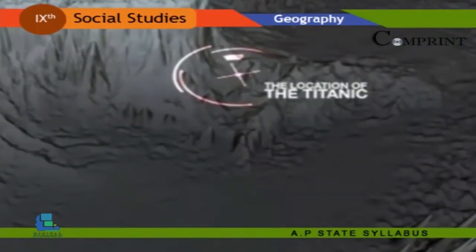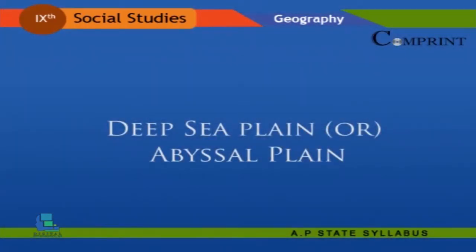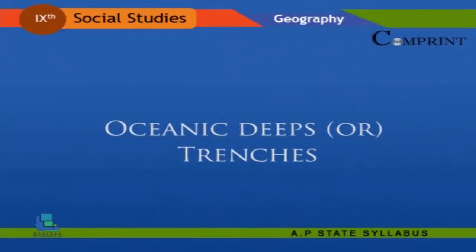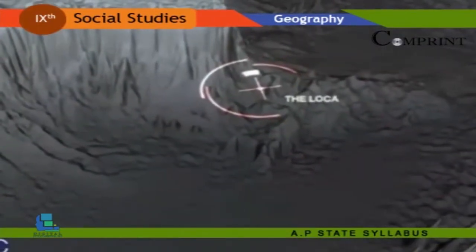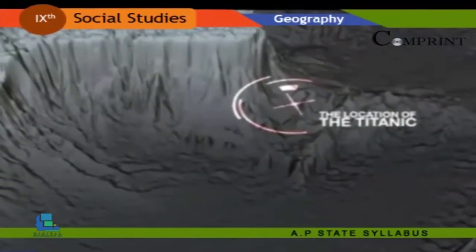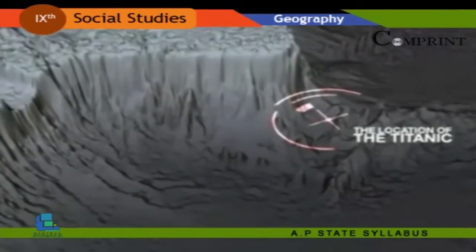Deep sea plains or abyssal plains are gently sloping areas of the ocean basins. These are the flattest and smoothest regions of the world. Oceanic deeps and trenches are large, narrow trenches that plunge as great ocean deeps to a depth of 6,000 meters or more.